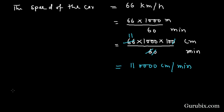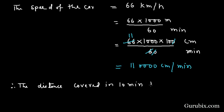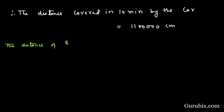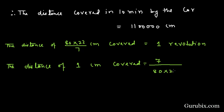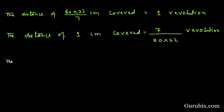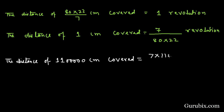Therefore, the distance covered in 10 minutes by the car will be 11 lakh cm. The distance of 80 times 22 over 7 cm is covered in 1 revolution. The same as 1 cm covered in 7 over 80 times 22 revolutions. Therefore, 11 lakh cm is covered in 7 times 11 lakh over 80 times 22 revolutions.